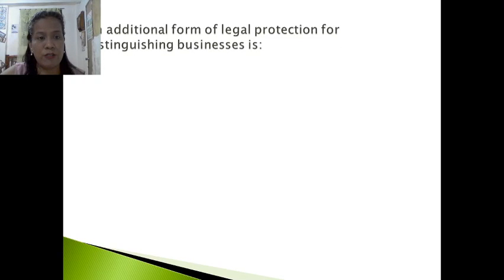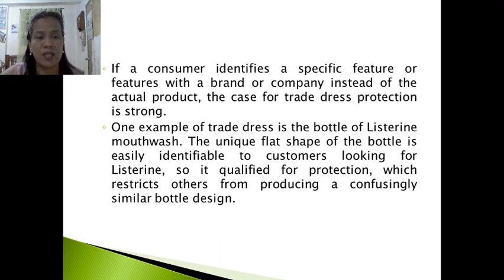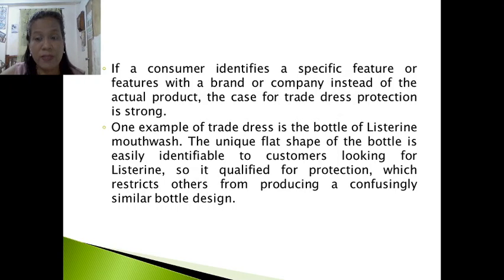An additional form of legal protection is trade dress, which includes identifying features of a product or company such as packaging elements and similar concepts. Product features don't usually fall under trademark for legal protection but instead under trade dress protection. If a consumer identifies a specific feature with a brand instead of the actual product, the case for trade dress protection is strong. One example is the bottle of Listerine mouthwash — its unique flat shape is easily identifiable to consumers, qualifying it for protection that restricts others from producing a confusingly similar bottle design.